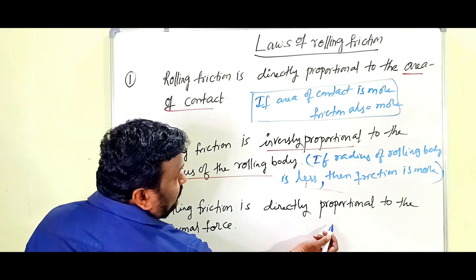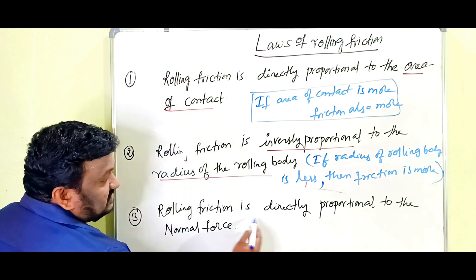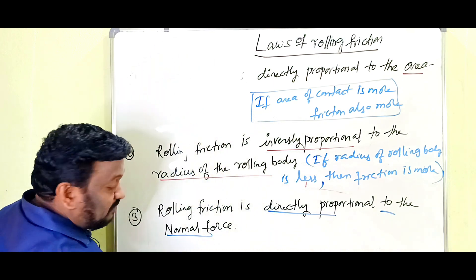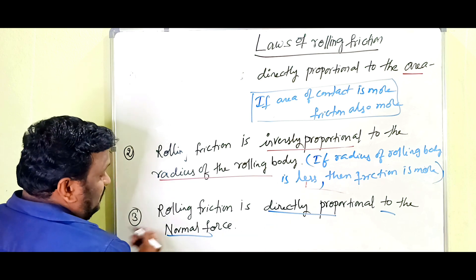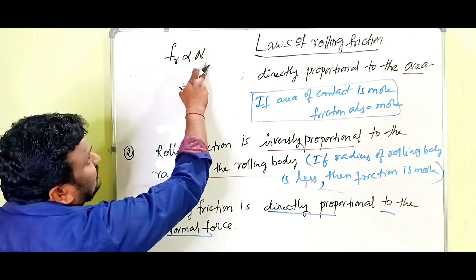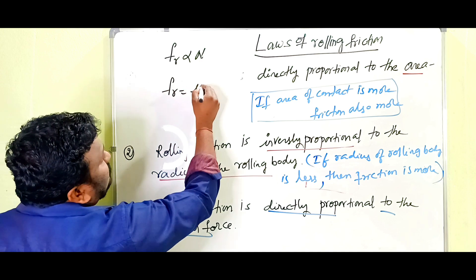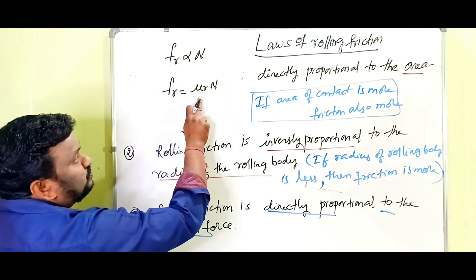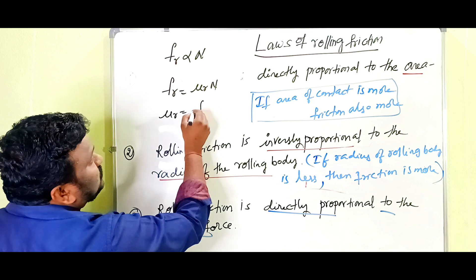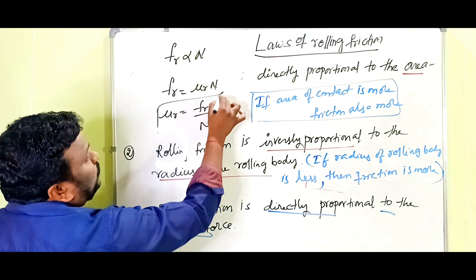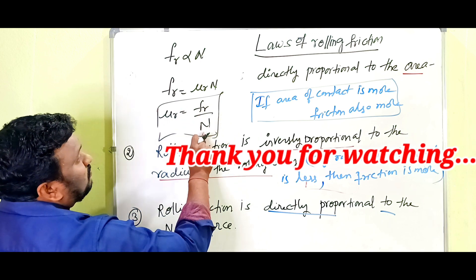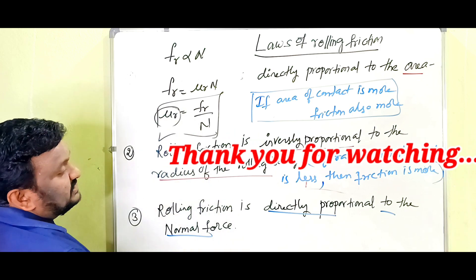The third law of rolling friction: rolling friction is directly proportional to the normal force. So Fr is proportional to N, and we write Fr = μR × N, where μR is the coefficient of rolling friction. It is defined as μR = Fr / N. The ratio of rolling friction to the normal force is called the coefficient of rolling friction.